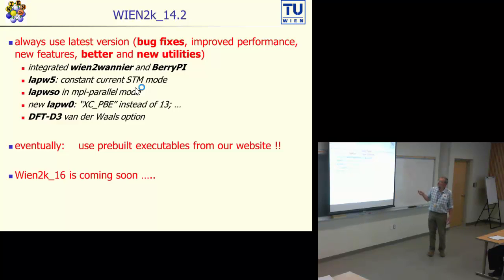For instance, in 14.2 we integrated Wien2Wannier and the BerryPI program, new features of lapw5 to do constant current STM mode, running the spin-orbit program in MPI, allowing DFT-D3 or different exchange functionals. In the next version we will have support for LIBXC, so you can use basically any exchange correlation potential you want to use.